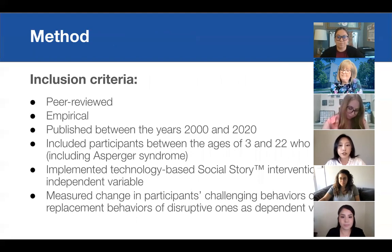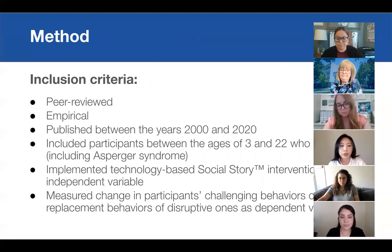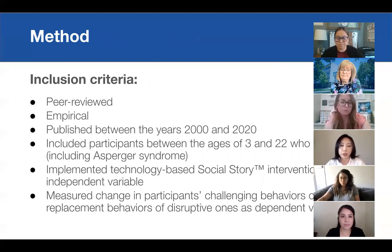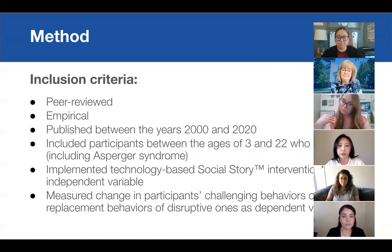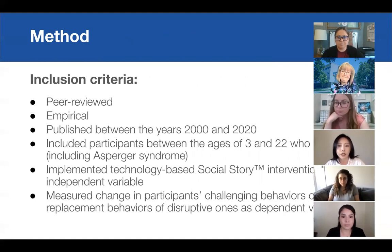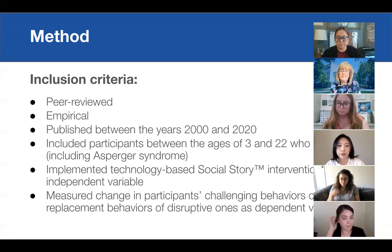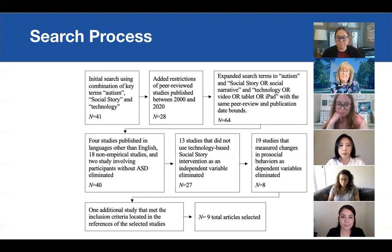To select studies for the review, I used the following inclusion criteria: studies were peer-reviewed, empirical, published between 2000 and 2020, included participants between the ages of 3 and 22 who had ASD including Asperger syndrome, and implemented technology-based social story intervention as an independent variable, and measured change in participants' challenging behaviors or replacement behaviors of disruptive ones as a dependent variable.